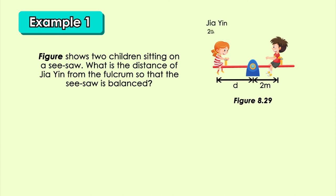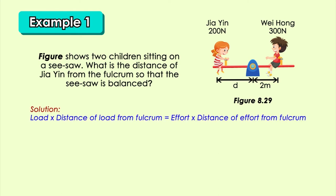Two children, Jia Ying and Weiho, are sitting on a seesaw. What is the distance that Jia Ying has to sit from the fulcrum so that the seesaw is balanced? From this diagram, we can see very clearly that Jia Ying's weight is 200 newtons and Weiho's weight is 300 newtons. Weiho's distance to the fulcrum is 2 meters. So, to make the seesaw balance, we have to find Jia Ying's distance to the fulcrum, D. We just need to put the numbers in the formula: 200 newtons times D equals 300 newtons times 2 meters.